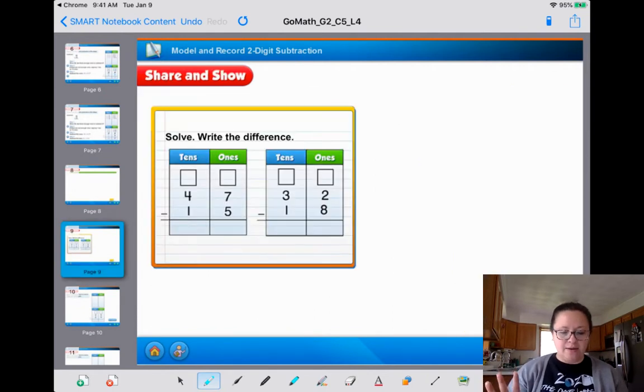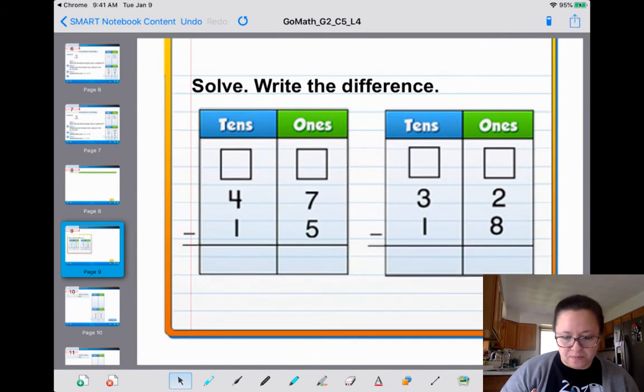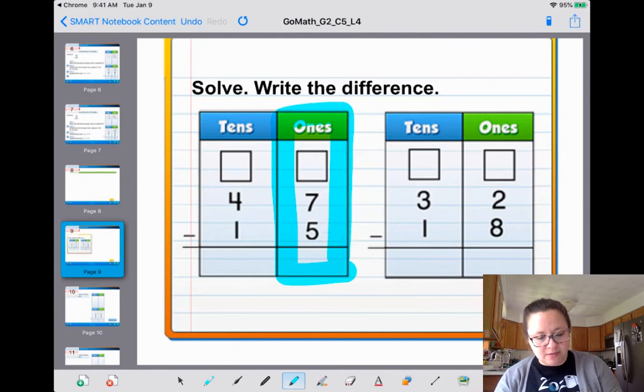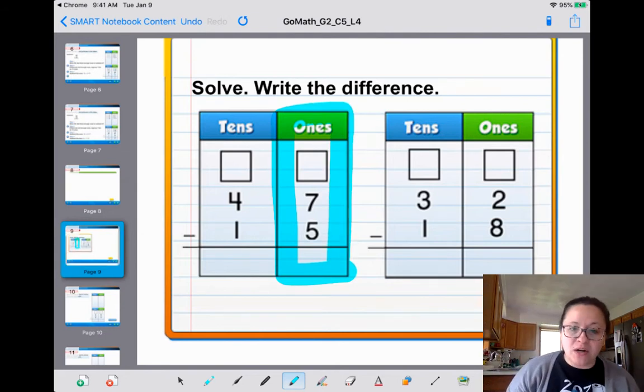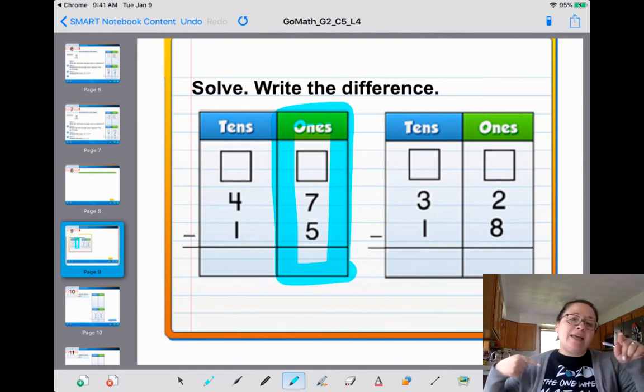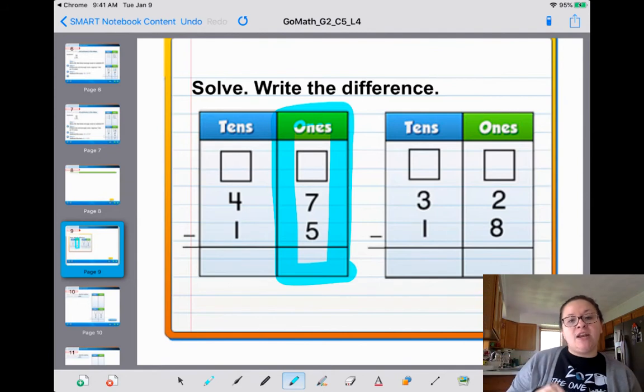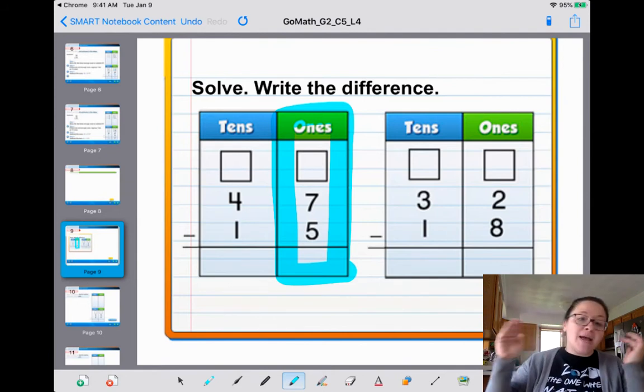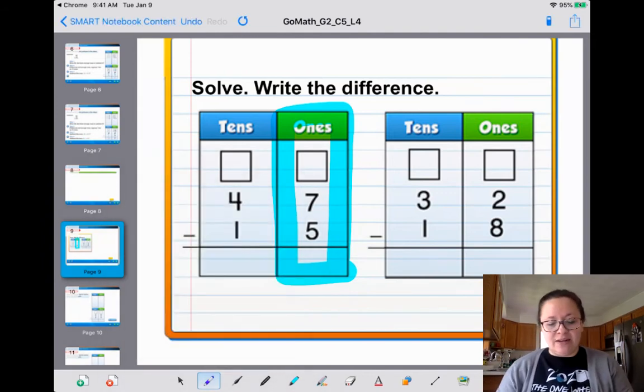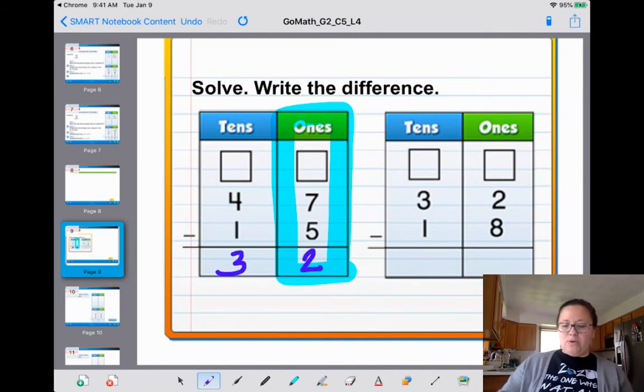Let's do some problems together. This is what it's going to look like. We're going to do the rhyme together. We're going to practice. So, we always look where? We look in the ones place. And we say the rhyme to ourselves. We say, more on top, don't have to stop. More on the floor, go next door, get 10 more. I'm looking at the 7. There's more on top. So, we don't have to stop. 7 take away 5 is 2. 4 take away 1 is 3. Booyah. Love that.